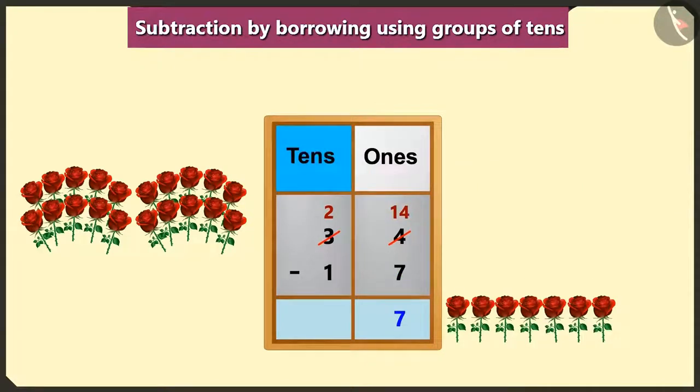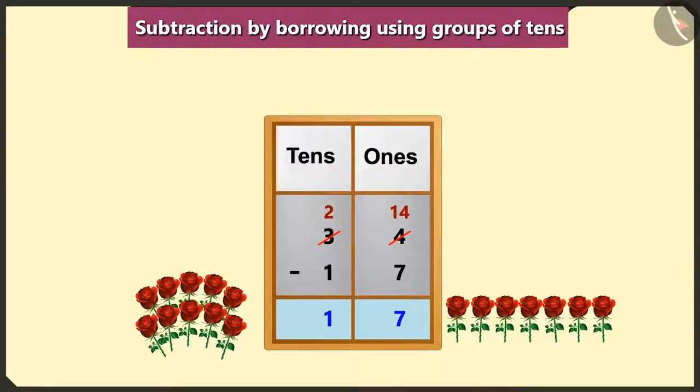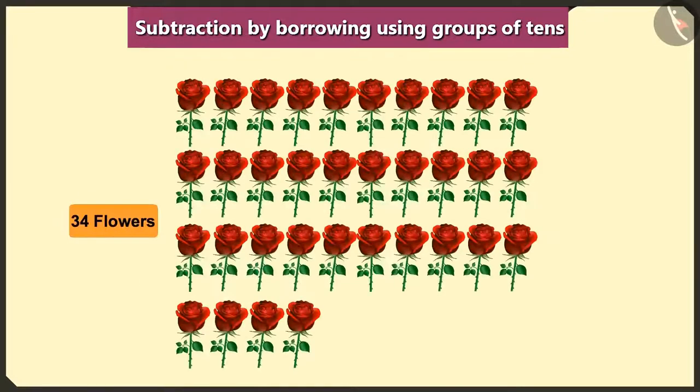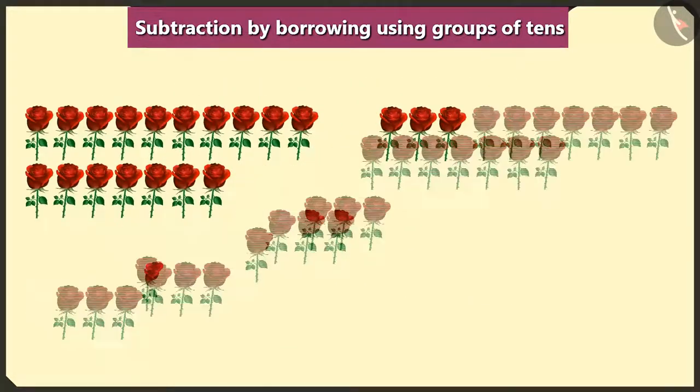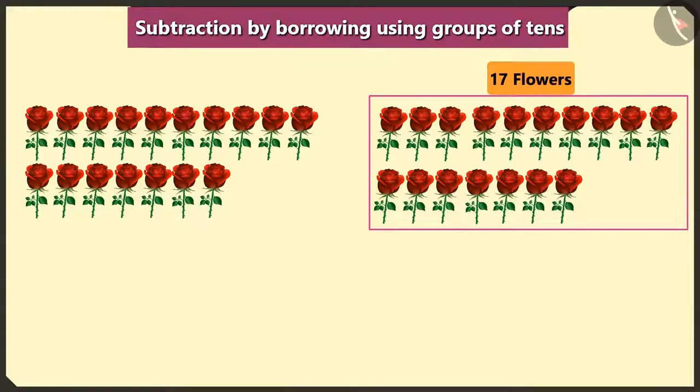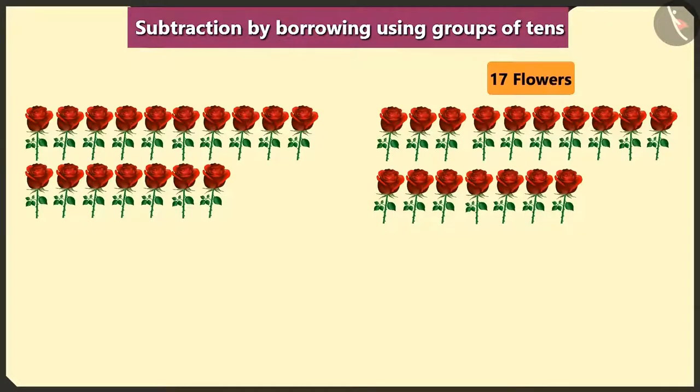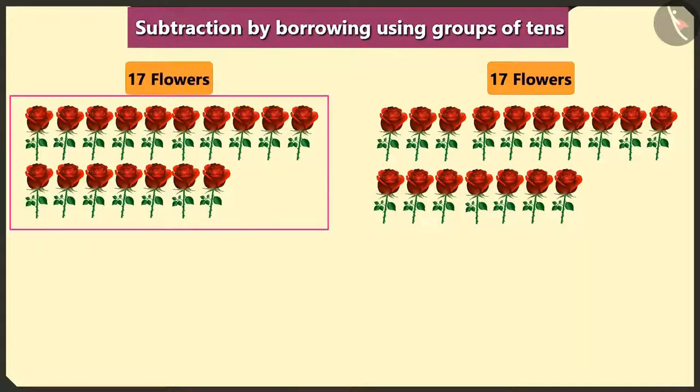Now, look here, if we subtract 1 ten from 2 tens, then we will have 1 ten in the box of tens. Yes, so this way, if I make a bouquet with 17 flowers from 34 flowers, then you too will have 17 flowers left to make a bouquet.